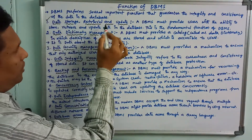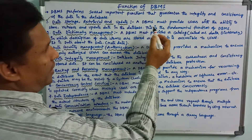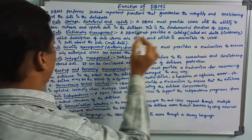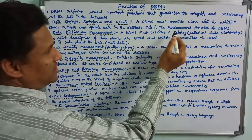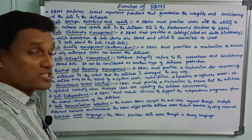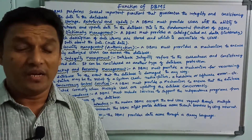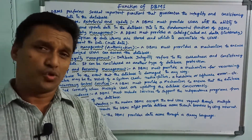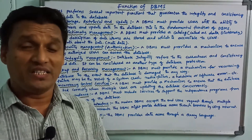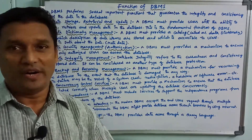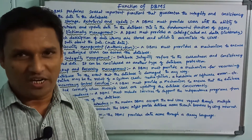The first function is data store, retrieval and update. A DBMS must provide users the ability to store, retrieve and update the data in the database. This is the fundamental function of DBMS — users can store, retrieve and update data in the database.